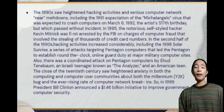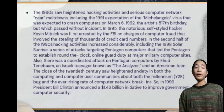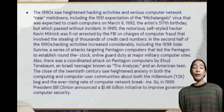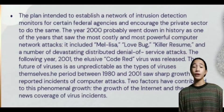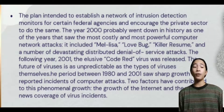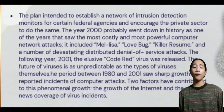In 1995, Kevin Mitnick was arrested by the FBI for stealing 1,000 credit card numbers. Also, the Pentagon was attacked by Ehud Tenenbaum, an Israeli teenager known as the Analyzer. In 1999, President Bill Clinton announced a $1.46 billion US dollar initiative to improve government computer security. The year 2000 saw some of the most costly and powerful computer network attacks, including Melissa, Lovebug, Killer Resume, and Code Red in 2001. Two factors contributed to this phenomenal growth: the growth of the internet and massive news coverage of various incidents.